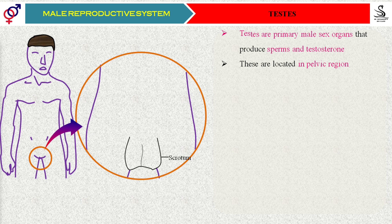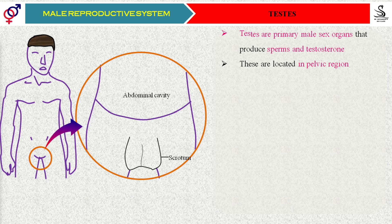Now you are observing the skin pouch called scrotum. Do you think that the testes are going to originate in the scrotum only whenever the male child is growing in the womb of the mother? By that time, whether the testes are going to originate in the scrotum? No. Then where are they getting originated? They will get originated in the abdominal cavity.